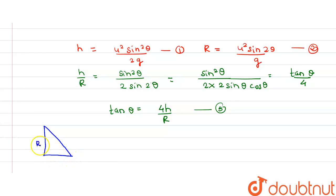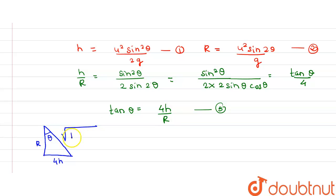Now let us consider a simple right triangle figure. One side is R and the other side is 4H, with angle theta. The hypotenuse is the square root of 16H² plus R².